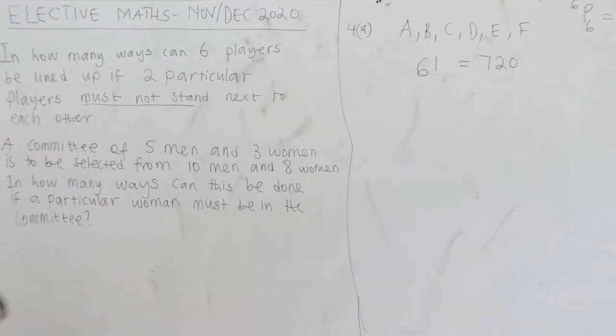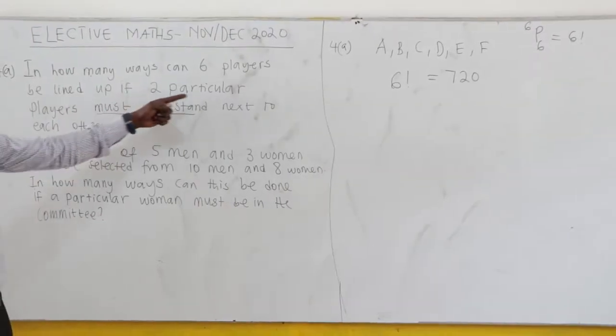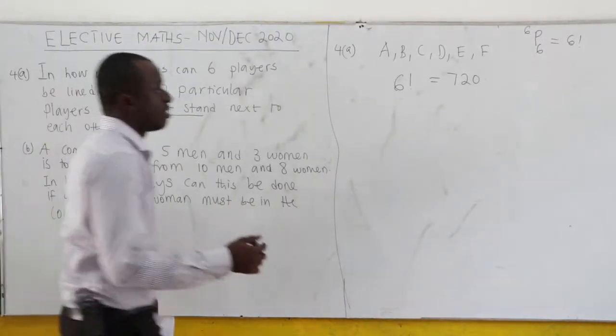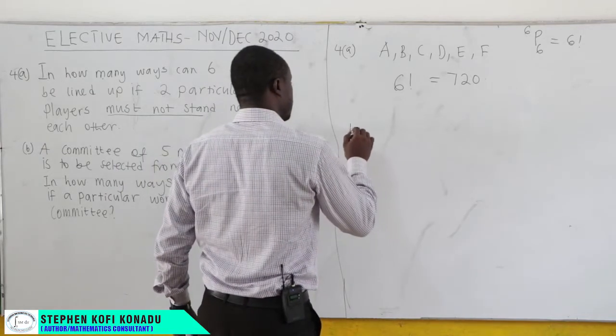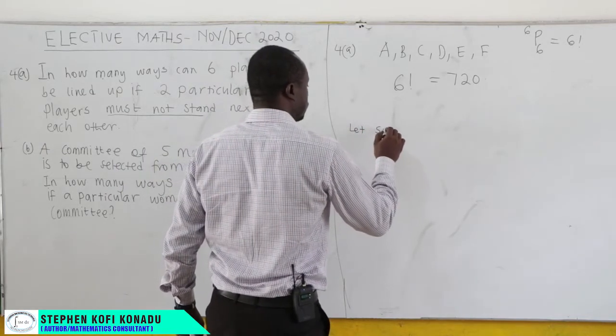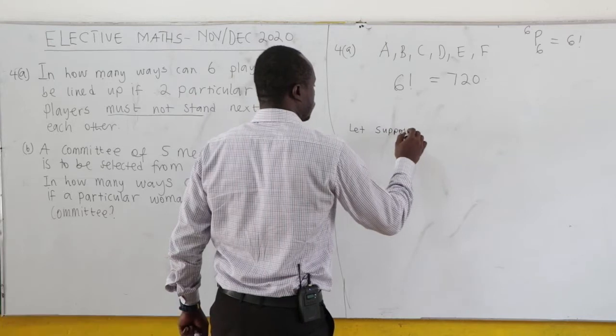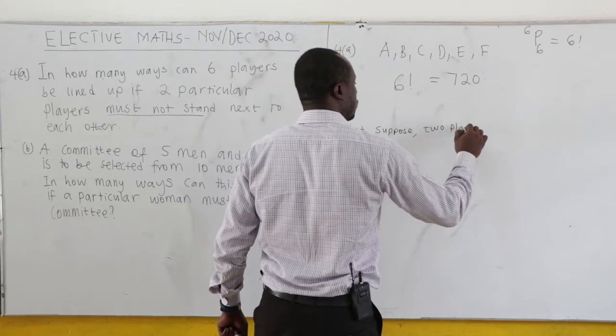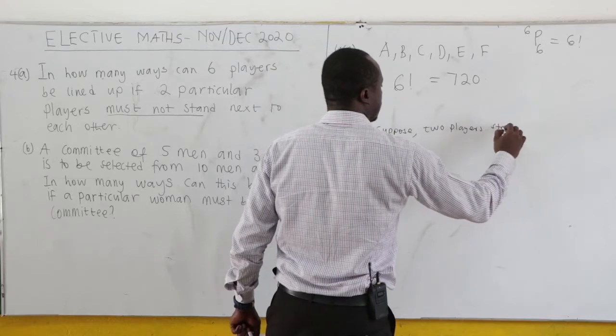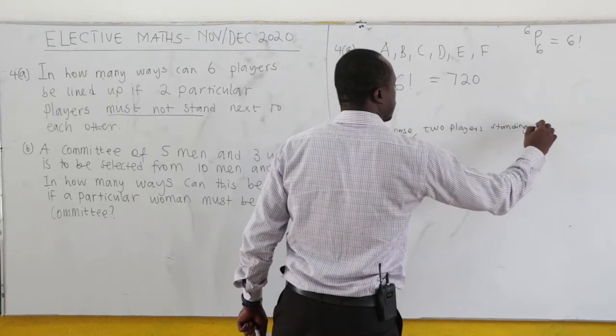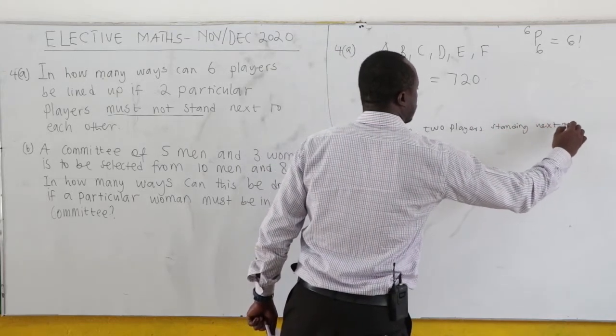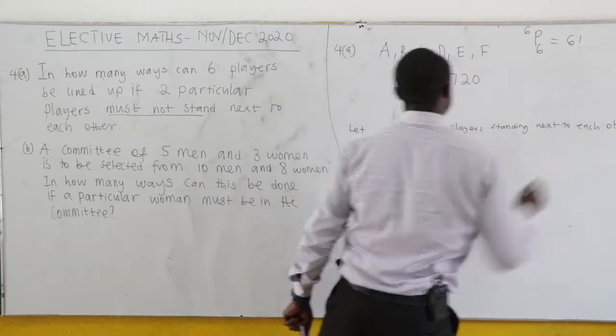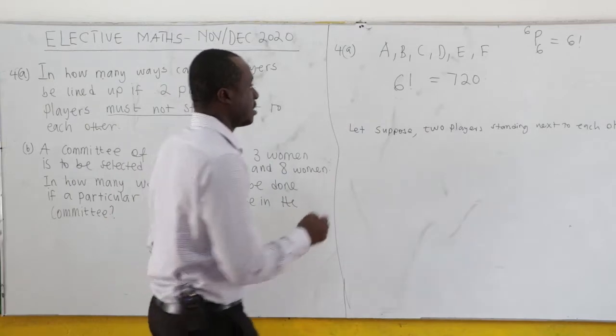Now let's take the condition. It says that we line up if 2 particular players must not stand next to each other. Now let's consider, let's suppose 2 players standing next to each other. So let's suppose that A and B are standing next to each other.